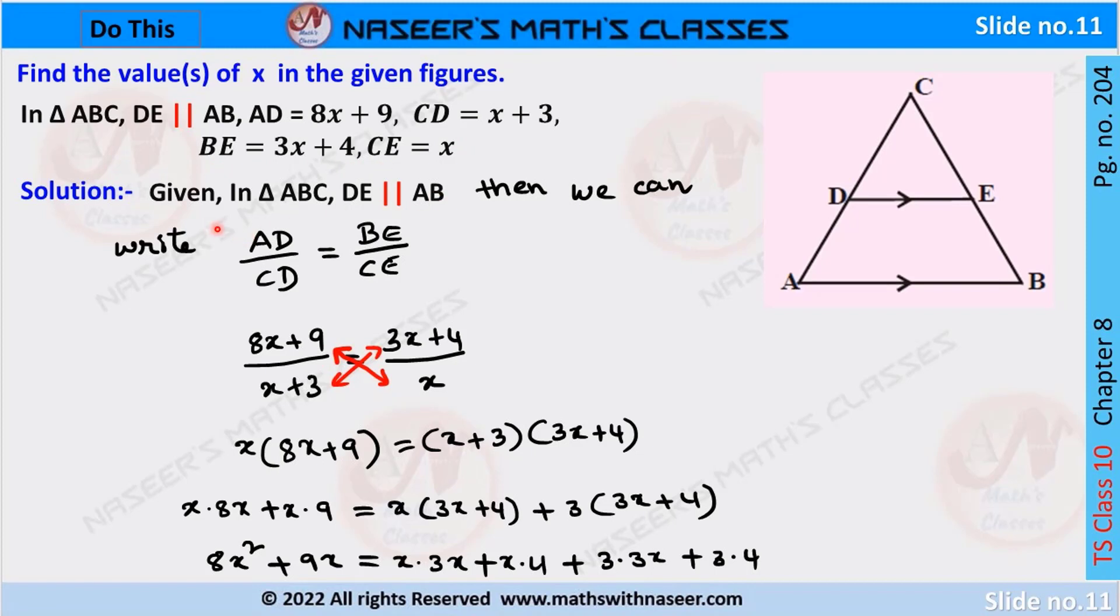From the given problem, in triangle ABC, DE is parallel to AB. Then we can write their corresponding sides are in proportion.